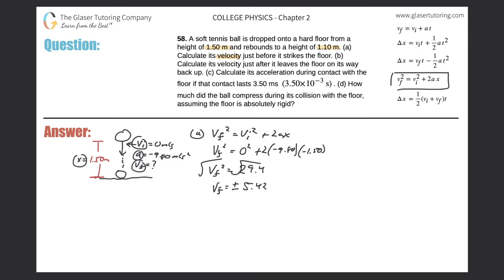The result is 5.42 meters per second. Now we consider the sign: the ball is traveling downward, so the velocity is negative. Therefore the final velocity for Part A is negative 5.42 meters per second.